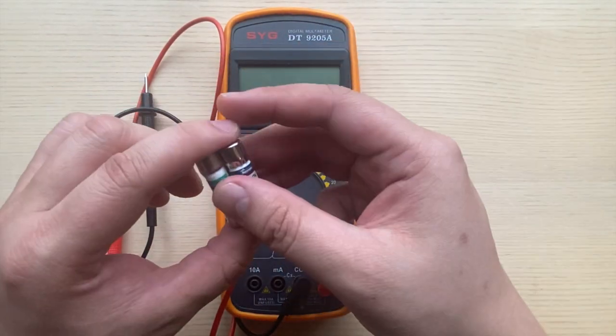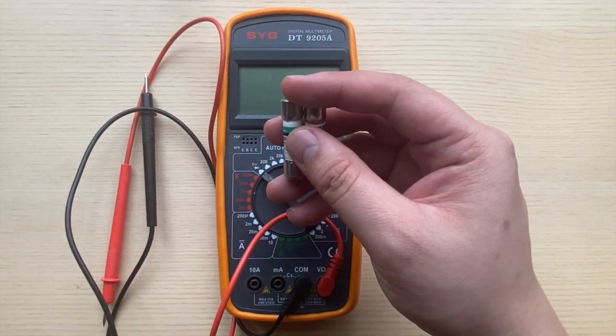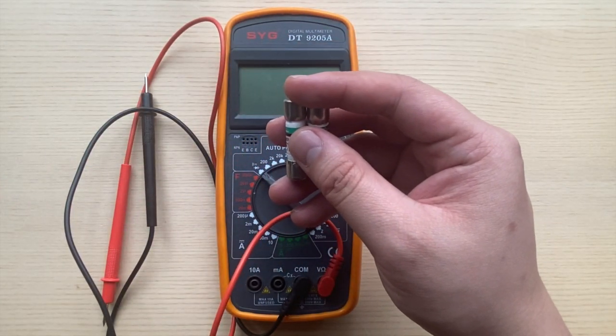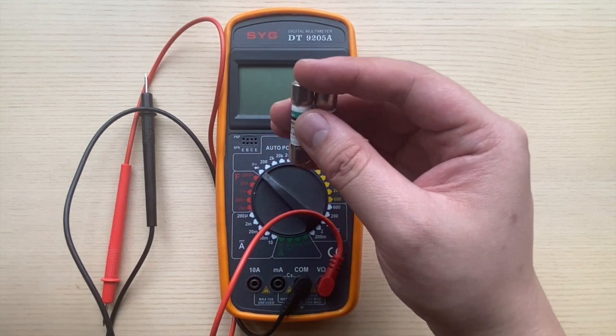Hi everyone, thanks for tuning in today. Today we're going to be taking a look at replacing a DMM fuse in your Fluke multimeter.